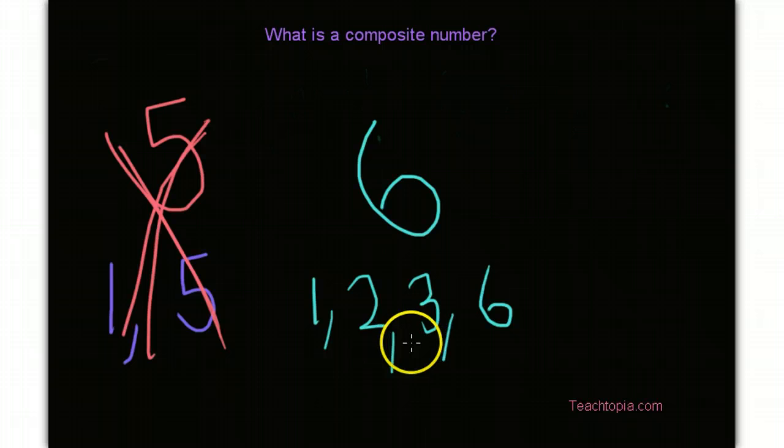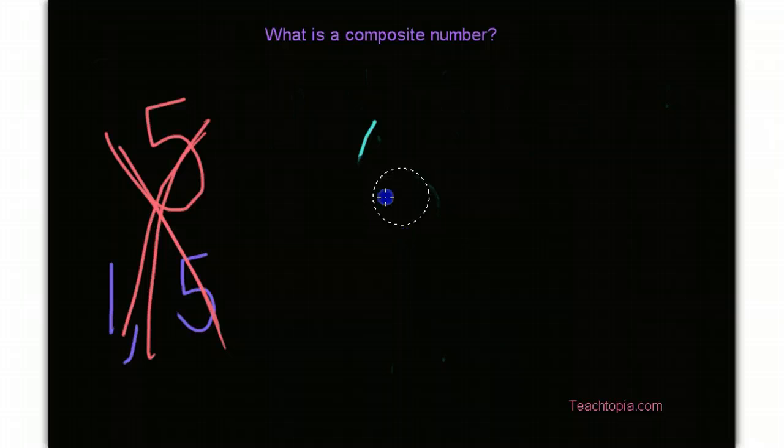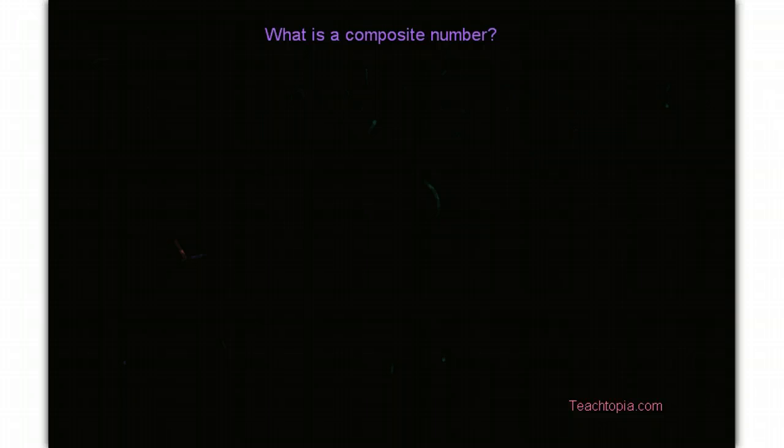This fits our definition because we have not only is it divisible by one and six but it has two additional factors here, two and three. Now, just to make sure we fully understand this, let's do a much larger number since we're having fun here determining whether a number is composite or not.